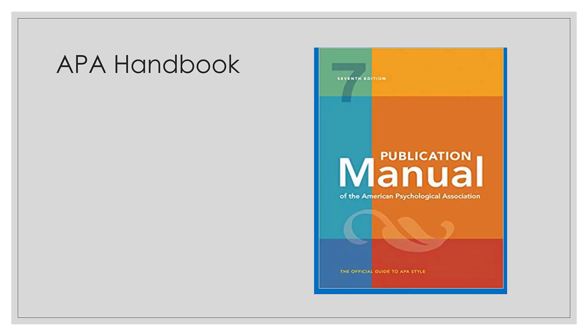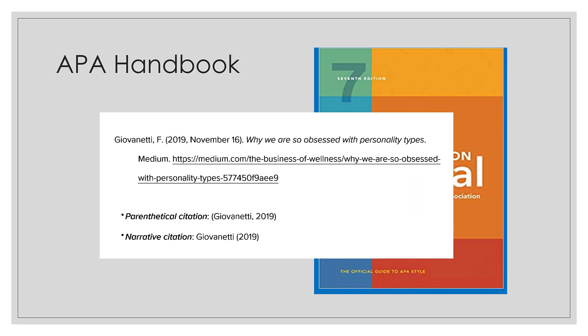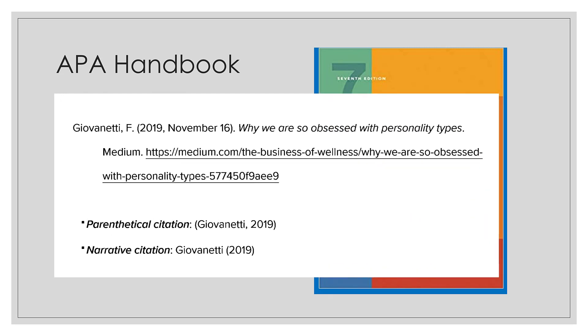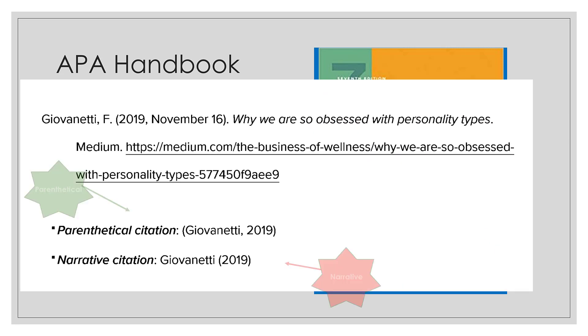As always, when in doubt, consult the APA Handbook. With each of their citation examples in the 7th edition, they give you a parenthetical citation and a narrative citation.